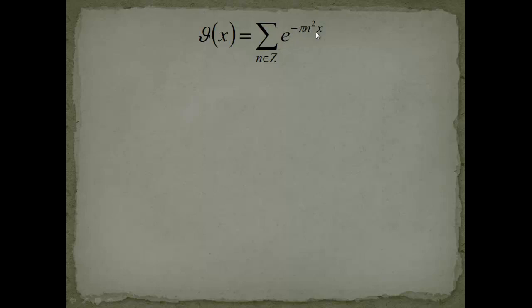The theta function is a pretty simple function. It's summing over all integer numbers from minus infinity to infinity, and the factors are e to the minus pi n-squared x. Starting in the middle, for n equals 0 this is 1. You add e to the minus pi x, then e to the minus pi multiplied with 4x, and so forth for all the square numbers — and also the negative integers.